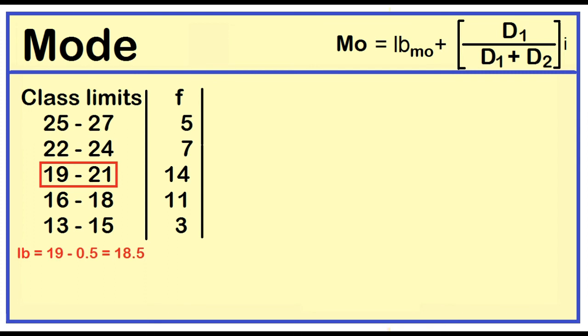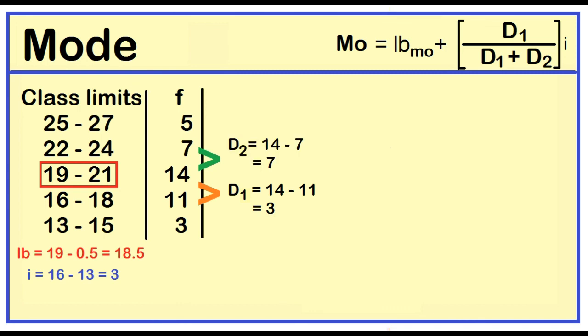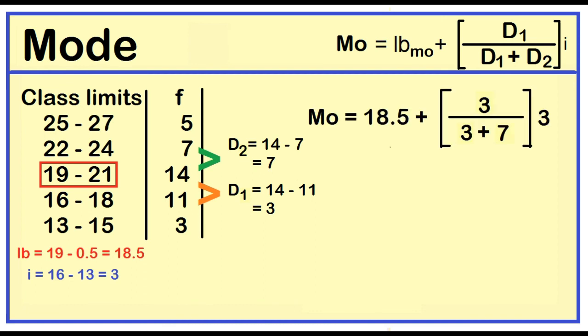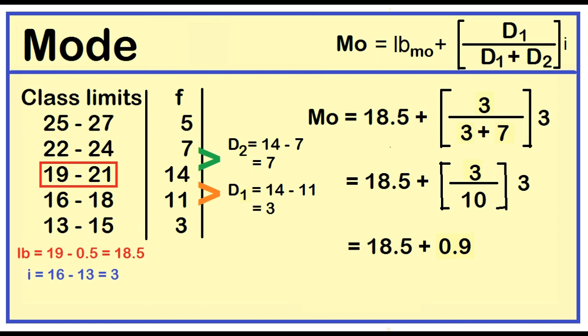The class width is the difference between two consecutive lower limits: 16 minus 13 is 3. D₁ is the frequency of the modal class minus the frequency of the next lower class: 14 minus 11 is 3. D₂ is the frequency of the modal class minus the frequency of the next upper class: 14 minus 7 is 7. Mode equals 18.5 plus (3 over 3 plus 7) times 3, which equals 18.5 plus 0.9. The mode is 19.4.